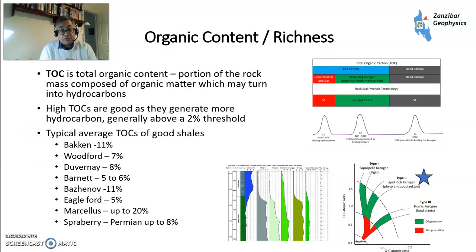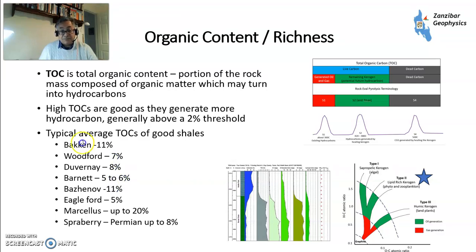First, there's organic content. If you haven't got the organic matter, it's not going to happen. Generally, in terms of source rocks, you need to be above about a 2% TOC threshold. Looking at the really good shales: Bakken at 11%, Marcellus up to 20% at its best bits, Barnaby and the Permian up to 8%, Eagleford 5% or a bit more in some places, Bazhenov in Siberia 11%, Barnett 5–6%, Duvernay in Canada 8%, Woodford in Oklahoma 7%. These are all fairly high, and they all tend to be marine — type 2 kerogens. Type 1s are quite rare, and type 3s tend to be a bit more gassy.